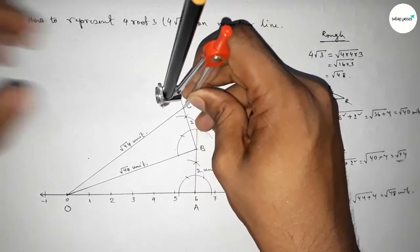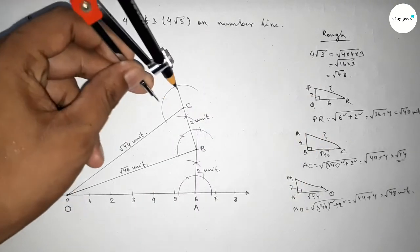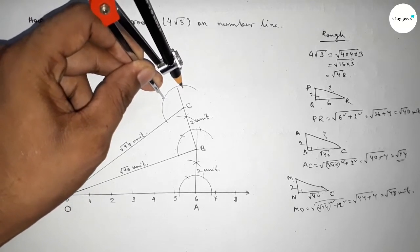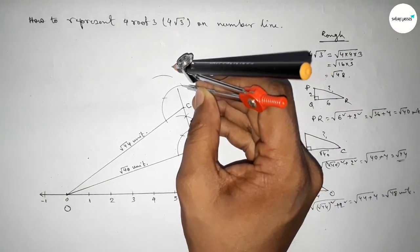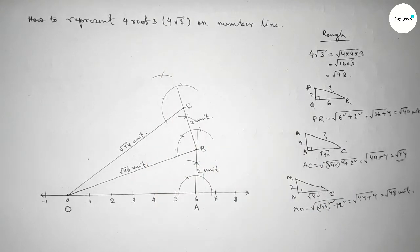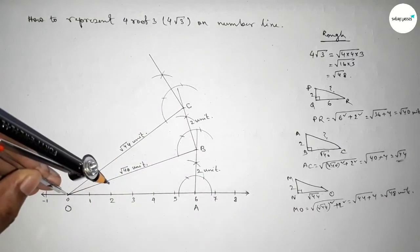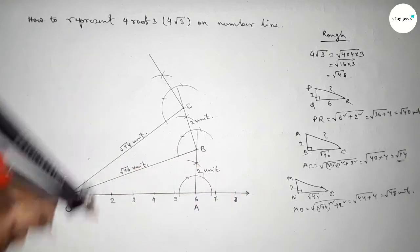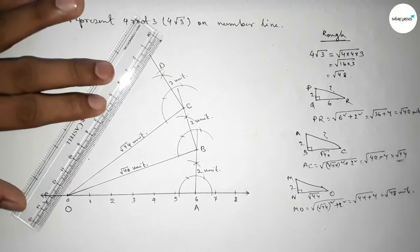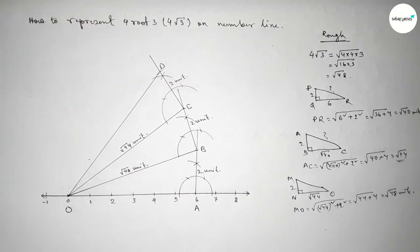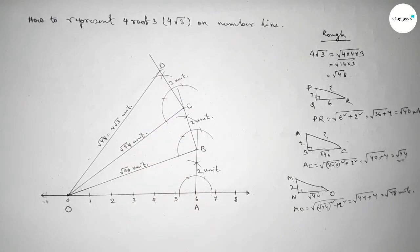Applying this concept here. Drawing a 90-degree angle on point C using a compass, drawing arcs with same length until both curves intersect at a point. Joining the line to get the 90-degree angle. Taking 2 unit length, putting the compass and marking point D. Joining O and D: from right angle triangle OCD, the hypotenuse OD = √48 = 4√3 units.